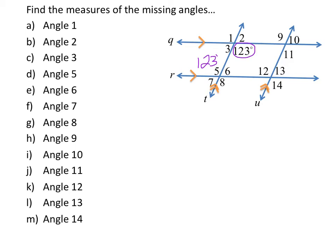Angle 1 would be 123 degrees because it's a corresponding angle with angle 5, and it's also a vertical angle with the angle we were given. Angle 8 would also be 123 degrees — it's an alternate exterior angle with angle 1, and it's vertical to angle 5. To get our other missing angle, angle 3 and angle 5 add up to 180, so angle 3 has to be 57 degrees since angle 5 is 123.